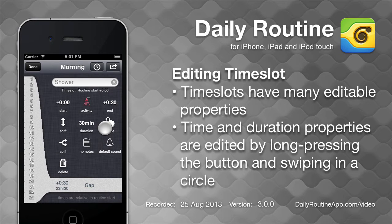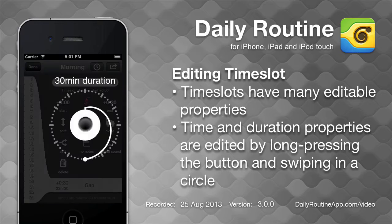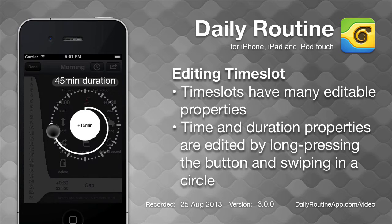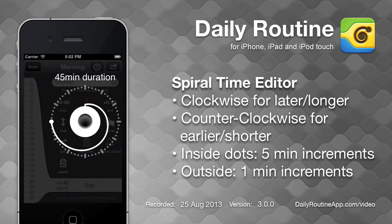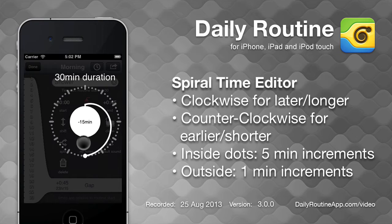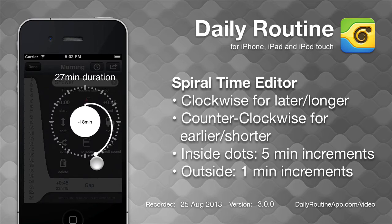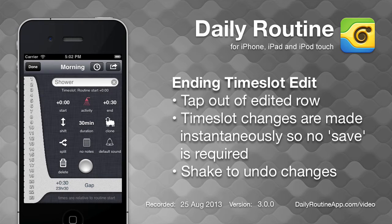We can change the time slot's duration by holding down the Duration button, then swiping in a circle, then releasing. When using the time spiral anywhere in Daily Routine, swiping inside the circle will change the value in 5-minute increments, while swiping outside uses 1-minute increments. Tap out of the time slot to finish editing it.